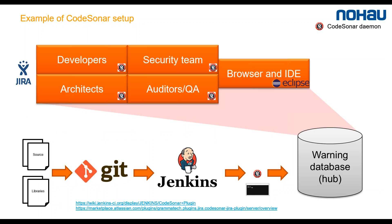This is a typical setup of CodeSonar. You manage your source code and binaries with Git, clone it, and then use Jenkins to build and launch the CodeSonar analysis, storing results in the database. Developers, architects, and others who need to run analysis locally also have a daemon that is launched locally and then uploads the results. If you have Jira or Bugzilla, there are also plugins for that software, which you can download freely at the links shown.